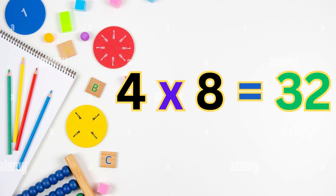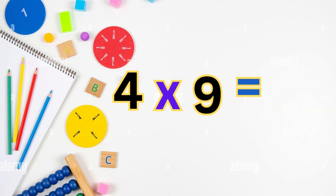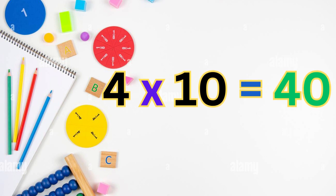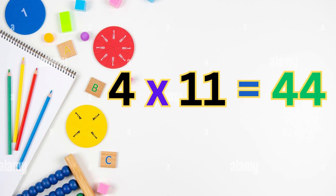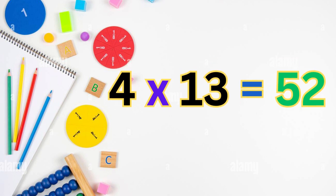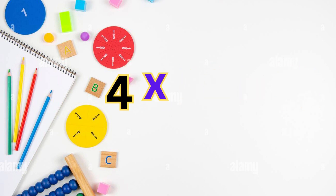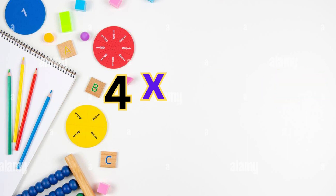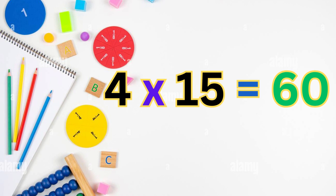Four eights are thirty-two, four nines are thirty-six, four tens are forty, four elevens are forty-four, four twelves are forty-eight, four thirteens are fifty-two, four fourteens are fifty-six, four fifteens are sixty.